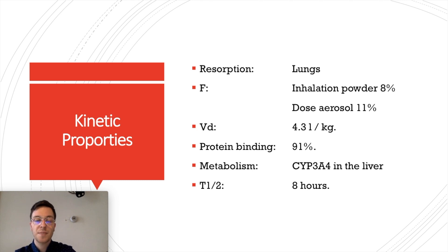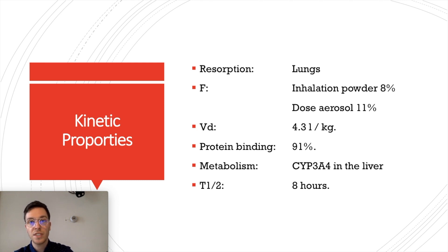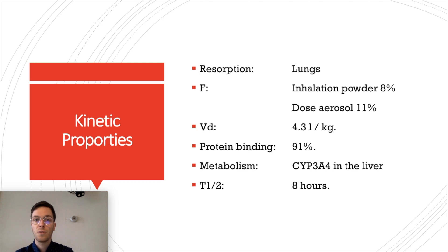Regarding the kinetic properties of fluticasone: absorption is mostly done by the lungs. The first-pass effect for the inhalation powder is only 8% and for aerosols only 11%. The volume of distribution is 4.3 liters per kilogram. Protein binding is 91%, which is very high. It is mostly metabolized by the liver via the CYP3A4 enzyme, and it takes approximately 8 hours to halve the concentration of fluticasone in your blood.